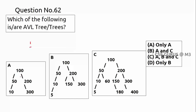Checking the first candidate: at the root with three nodes on each side, three minus three equals zero — balanced. For subtrees with one child versus zero, the difference is one — still fine. With two children versus one, two minus one equals one — acceptable. This tree is definitely an AVL tree.